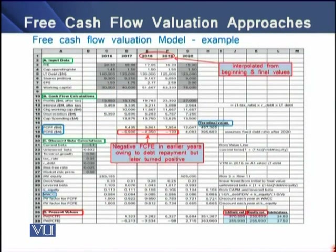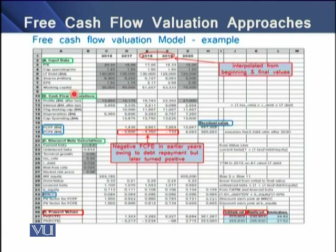To see how the free cash flow valuation model works, we have an example. In Panel A, we have input data related to price-earnings, capital spending, long-term debt, number of shares, earnings per share, and working capital. In Panel B, we have cash flow calculations using profit, interest rate, change in working capital, depreciation, and capital spending. The resulting figures are the free cash flow of the firm and free cash flow to equity — the two cash flows needed for our example.